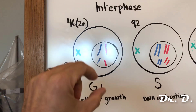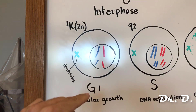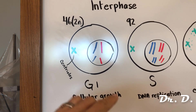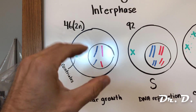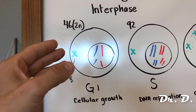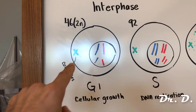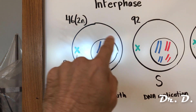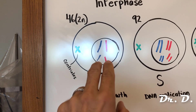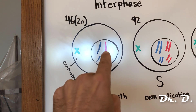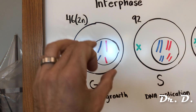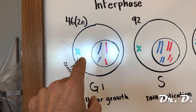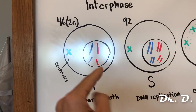G1 is a sub-phase of interphase. During G1, the cell is just growing — producing proteins and organelles it needs. Animal cells have one pair of centrioles at this time. Inside the nucleus, there are homologous chromosomes: dad's and mom's chromosome 1, dad's and mom's chromosome 2, for example. There would be 46 chromosomes in a normal cell at this point.